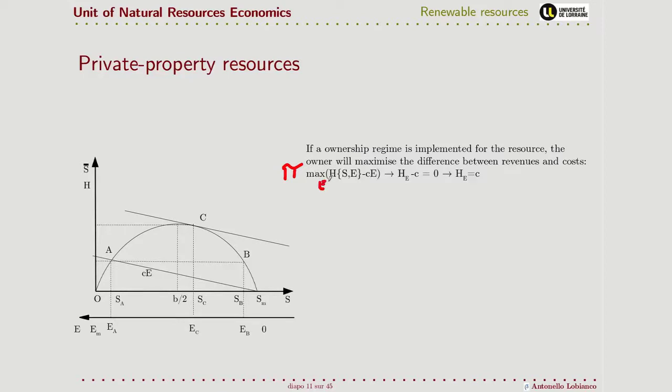So the variable that is free to change is the harvesting level, so he maximizes over the harvesting level this difference here. And so taking the first order conditions, he comes out that he harvests till the point where the marginal harvesting output by effort is equal to c, the marginal cost. So again, a trade-off between the marginal benefits and the marginal cost.